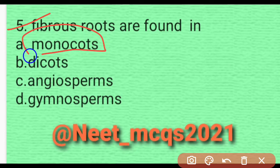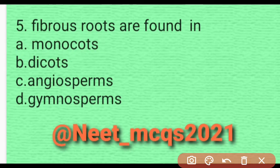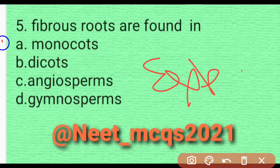Question 4: Fibrous roots are found in — fibrous roots are basically found in monocots. For example, in wheat. So option A is correct.